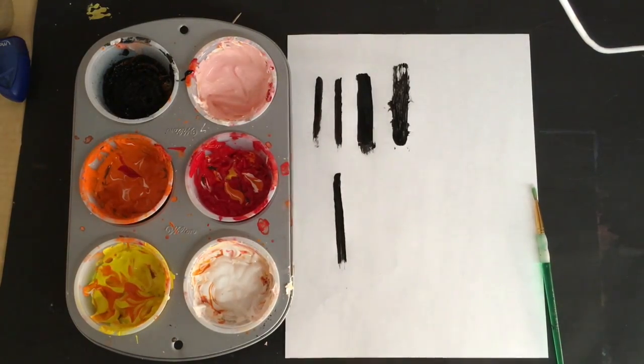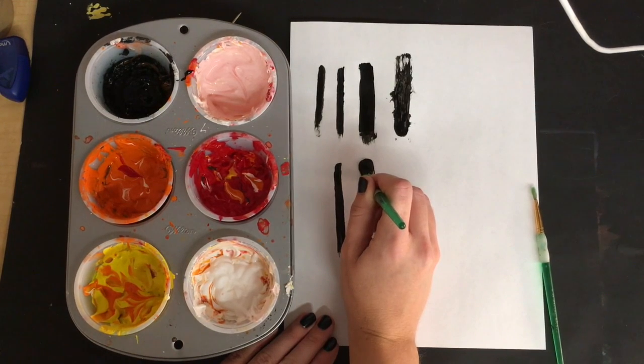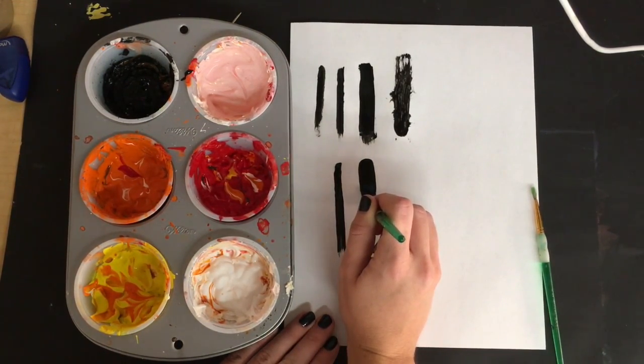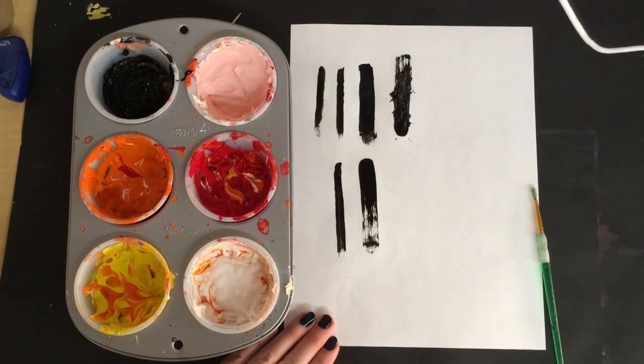If I want to make thicker bold lines, what I would do is I would take my brush, push down really hard, and then my brush fans out a little bit and I start to get thicker, darker lines.